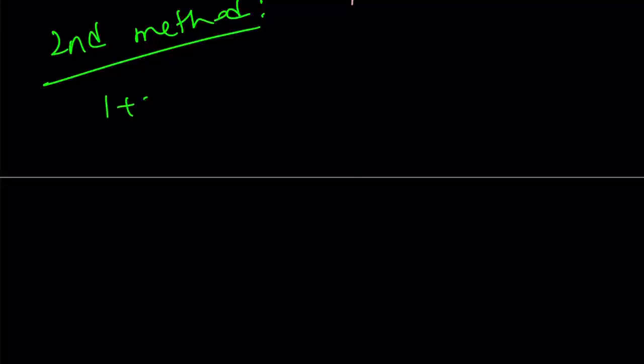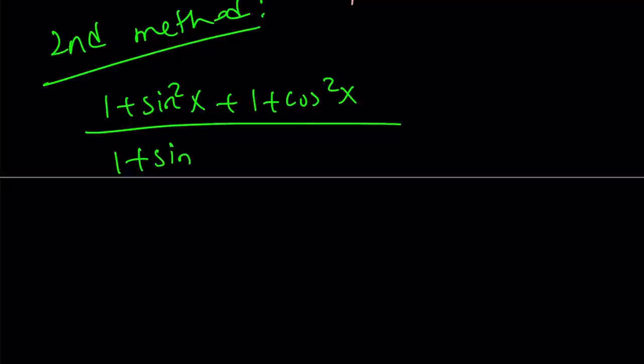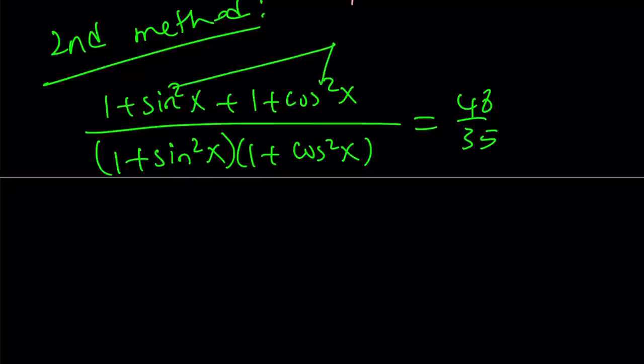If I do make a common denominator, I get 1 plus sine squared plus 1 plus cosine squared. And then that is divided by their product. And this is equal to 48 over 35. And then, remember, sine squared plus cosine squared is equal to 1. 1 plus 1 plus 1 is equal to 3.